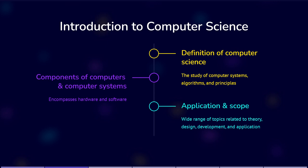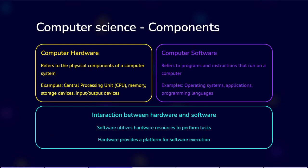Hardware is the parts of a computer you can physically touch with your hands. Software is like a set of instructions written in a special language that computers and devices can understand. It contains commands and directions to the computer and can even interact with the hardware.